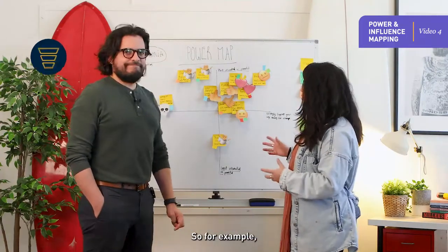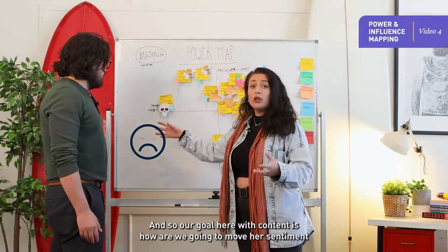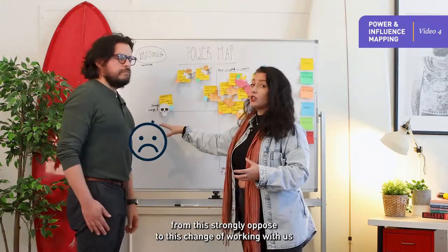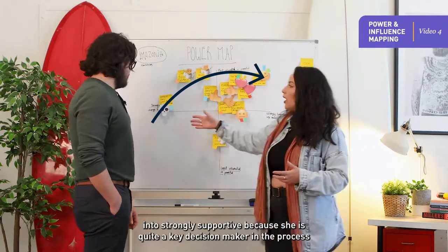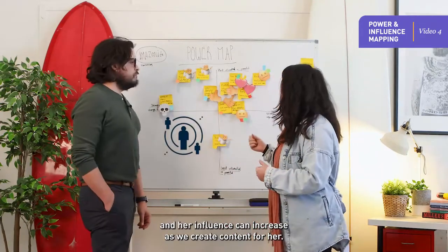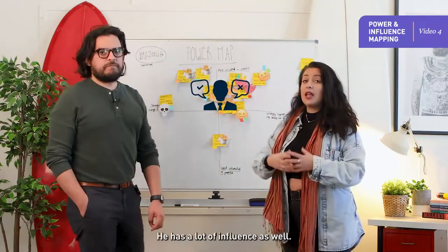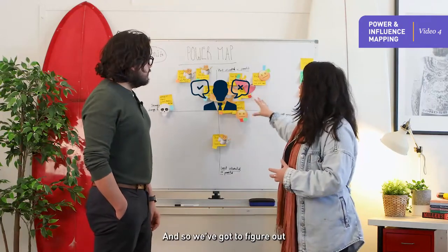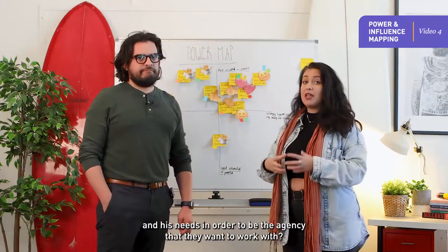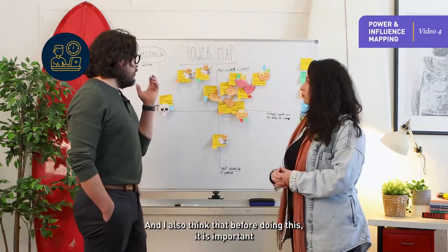For example, we have Natalie Adani, who doesn't feel so good about us. Our goal here with content is: how are we going to move her sentiment from strongly opposing working with us to strongly supportive? Because she is quite a key decision maker in the process, and her influence can increase as we create content for her. Then someone like Brian McDougall is our top key decision maker with a lot of influence, so we've got to figure out how to create content that supports both his pain points and his needs in order to be the agency they want to work with.